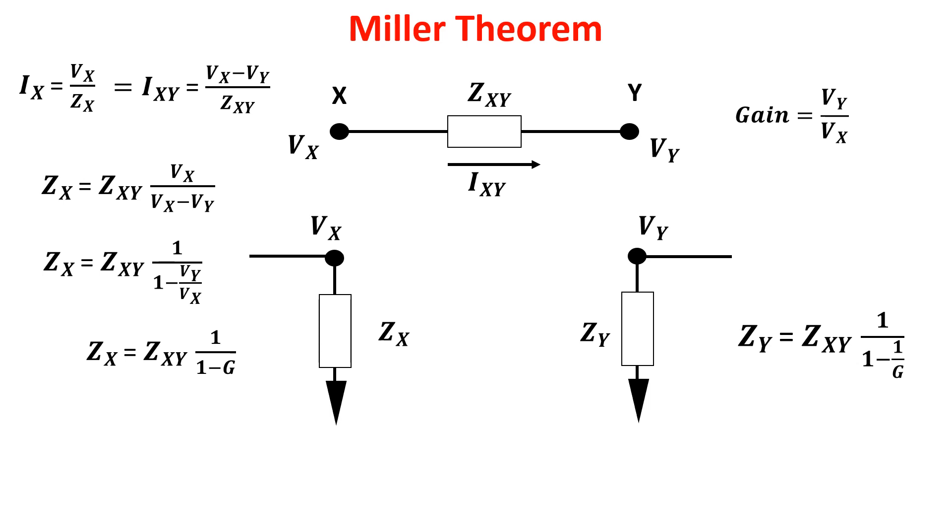Now you can realize if we would have a capacitor as impedance, so that Zxy equals 1 over C, we would have this as impedance to our ground, in which you see the capacitance is magnified by the factor (1 minus G). And if G is negative, we have the Miller effect as we saw in the BJT.